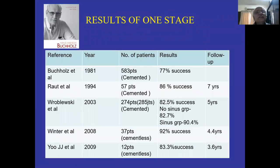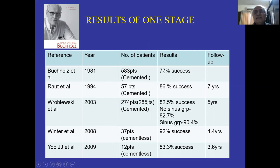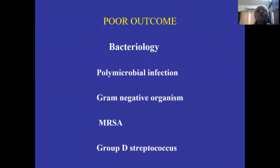Results of one stage: from the German Buchholz series of more than 500 cemented hips in 1981, the success rate was only 77%. Today, looking at all the data, it is roughly between 70 and 80%. If a sinus is present, there is a slightly higher rate of complications. Today we are mainly using non-cemented implants even in single-stage revision. Poor outcomes in 20–30% are due to polymicrobial infections, Gram-negative organisms, MRSA, and Group D Streptococcus.